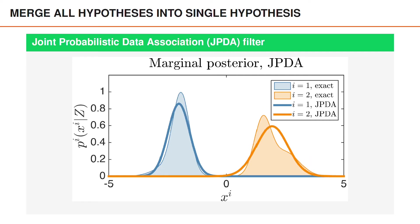If instead we merge all hypotheses, as in JPDA, we get the approximation shown here. We see that for both objects the approximation is arguably better than what it was for GNN. However, there's still some difference.